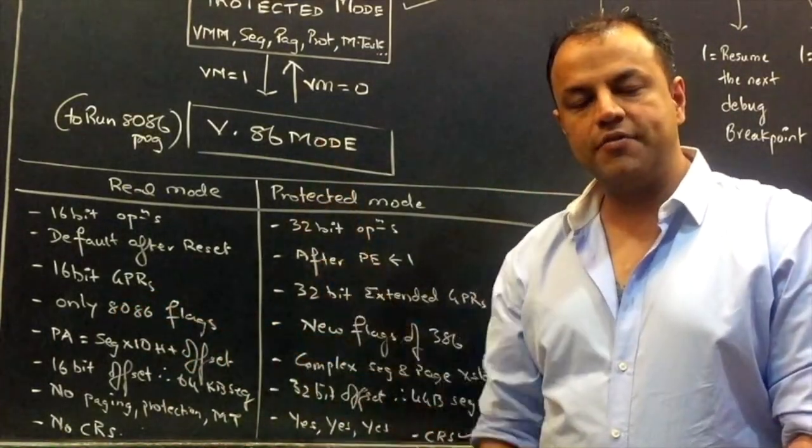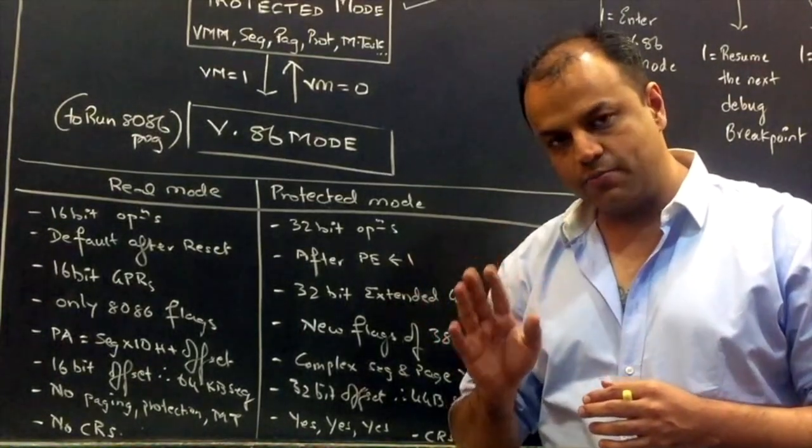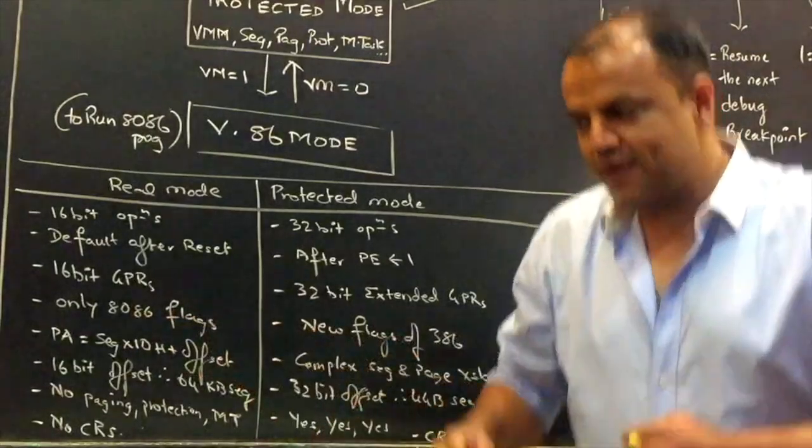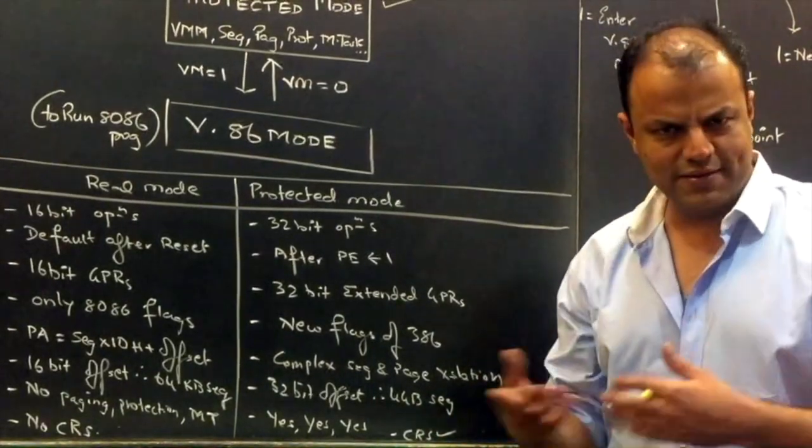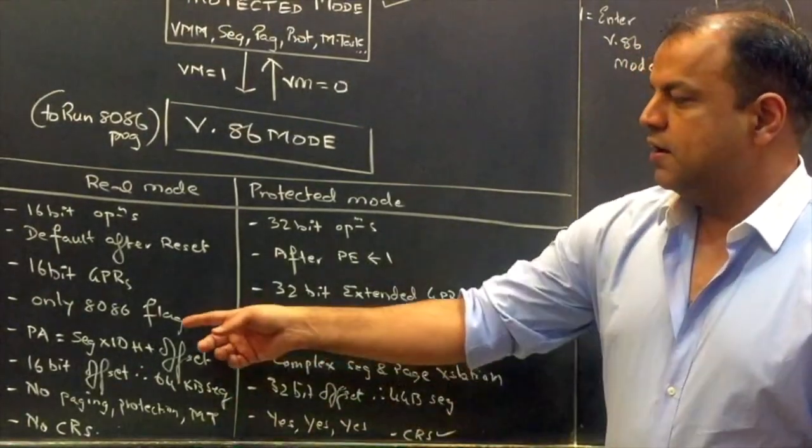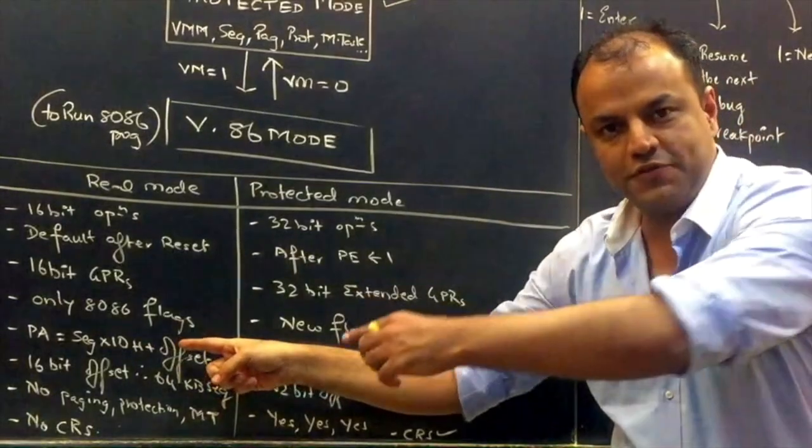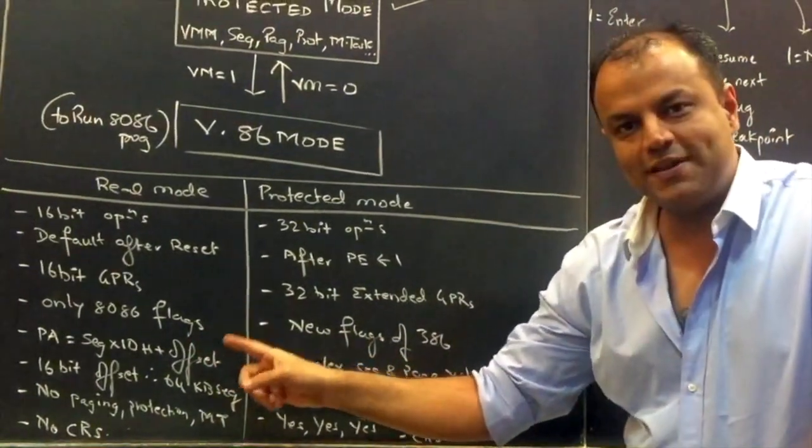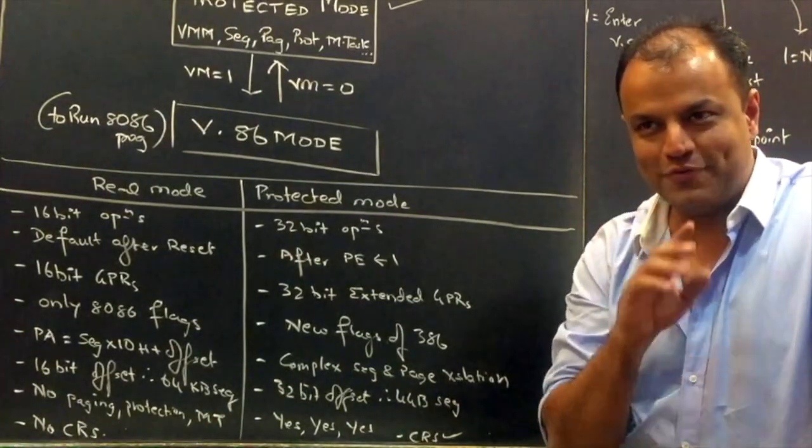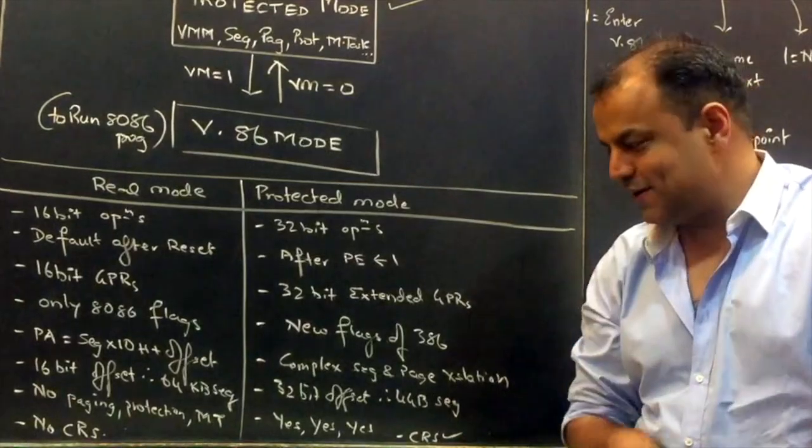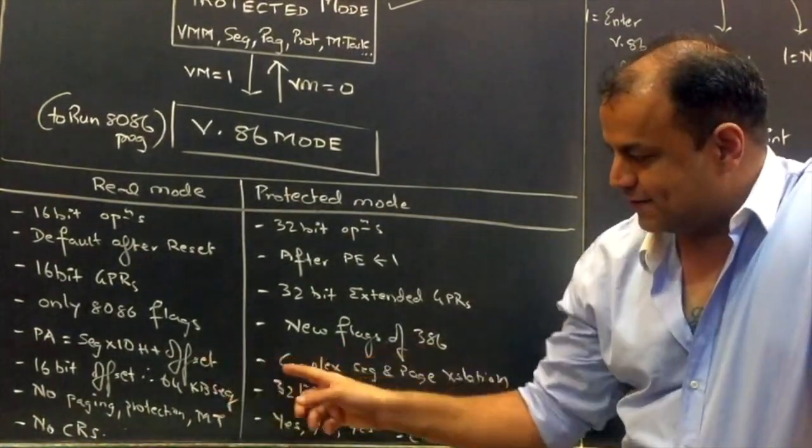Only 8086 flags are available in real mode. When you see the flag register of 386, you will notice some new flags are added. But those new flags are not available in real mode. They're only available in protected mode. Here, those flags are available plus new flags are added by 386. Virtual mode, RF, NT, IOPL. There are four new flags. Physical address calculation is the same we did in the age-old method. Segment address multiplied by 10 plus offset. This is how you calculate physical address in real mode. In protected mode, this is a big process. It will take two full videos of at least 45 minutes to an hour to understand how to calculate physical address. First, it does segment translation. Then, it does page translation. Then, it finally gives you the physical address of the location that you want to access.